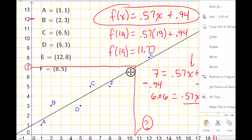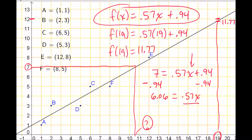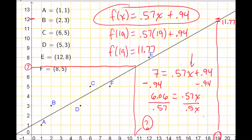I'm going to finish by dividing both sides by 0.57. On this side, when I divide by 0.57, I'm going to finish with just x. On the other side, if I take 6.06 and divide by 0.57, I'm told that's about 10.63.